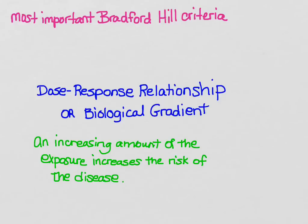The next important causal criterion is the dose-response relationship, also called the biological gradient. This says that with an increasing amount of the exposure, you should get an increased risk of the disease. This is why you'll often see studies breaking down an exposure into different levels and showing that the risk of disease changes with the exposure level, because this provides good evidence that the exposure is causally related to the disease. It's not a requirement for a causal relationship, but it supports one.